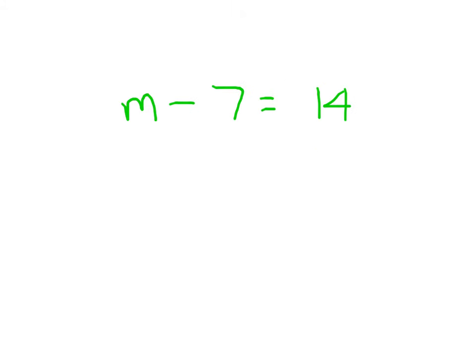Here, I have M minus 7 equaling 14. So again, I'm concentrating on this minus 7 right here. And I'm doing the opposite of it. I'm adding 7 to both sides.